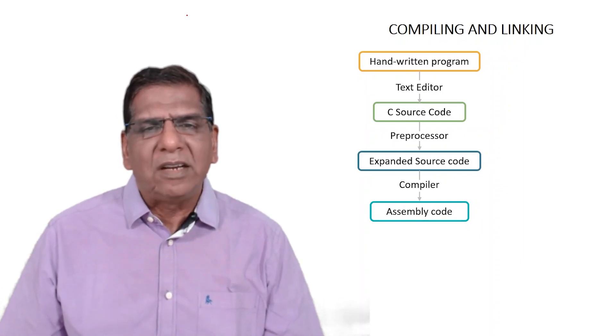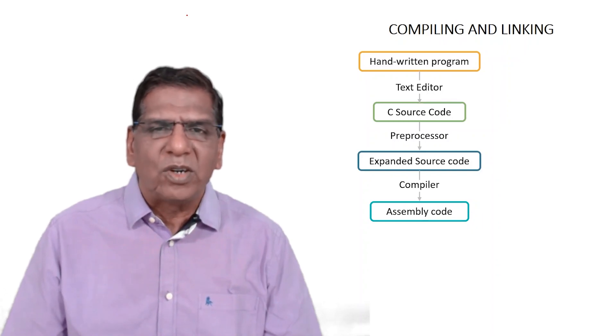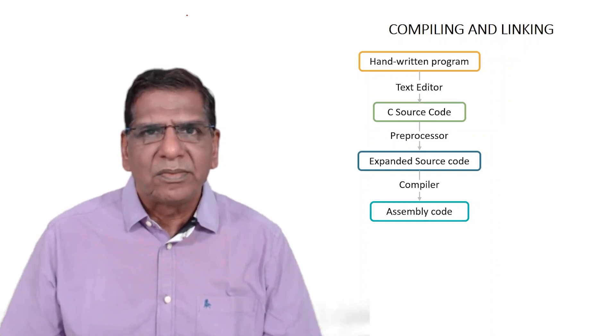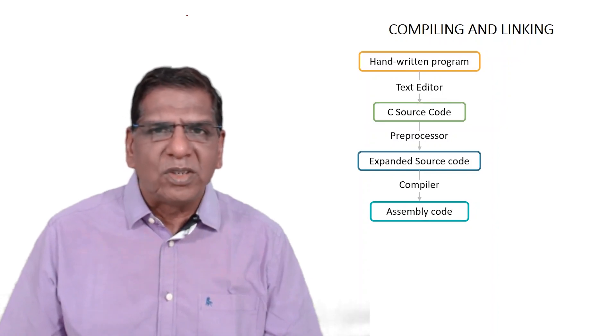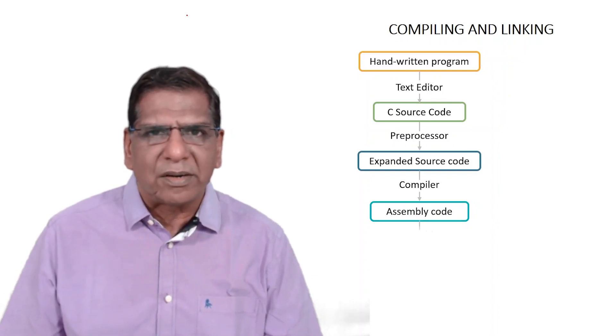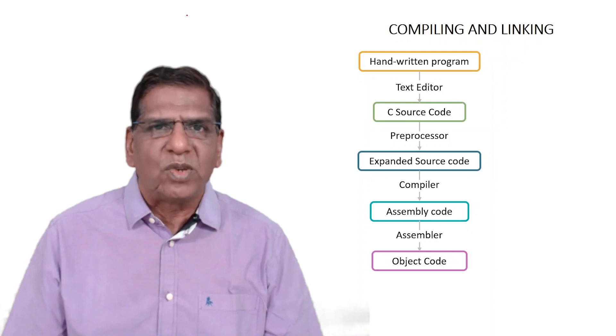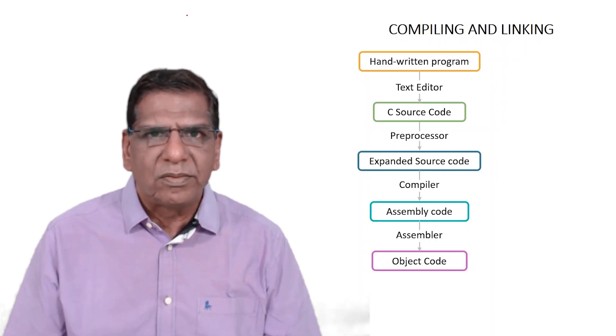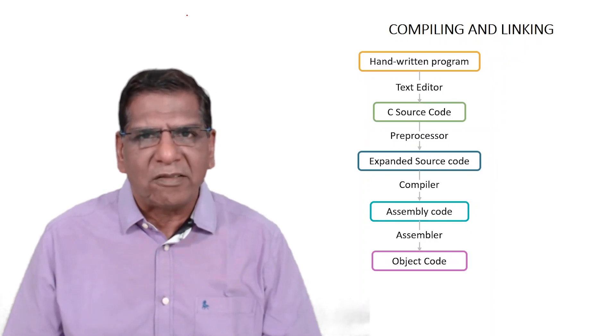The compiler will create what is known as assembly language code. This assembly language code is then submitted to the assembler, which creates what is known as object code. This object code is in machine language.